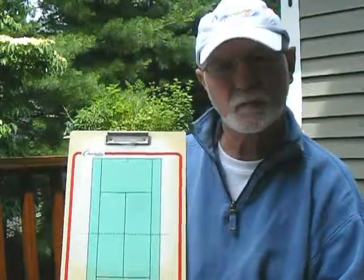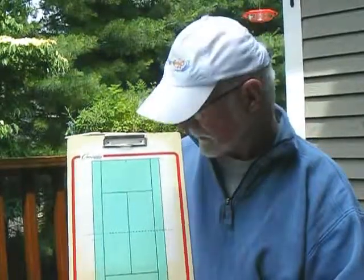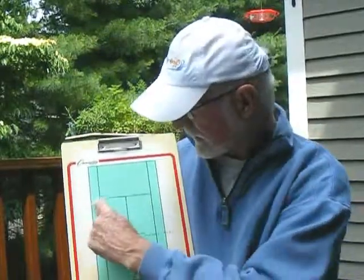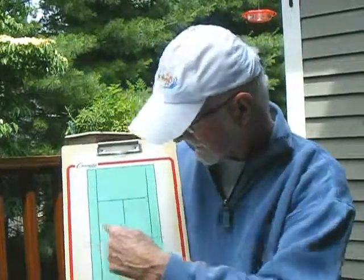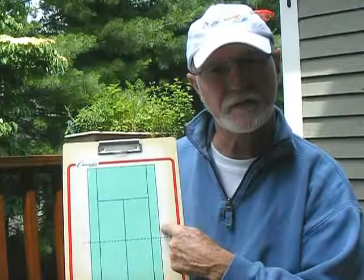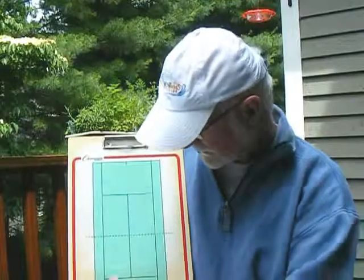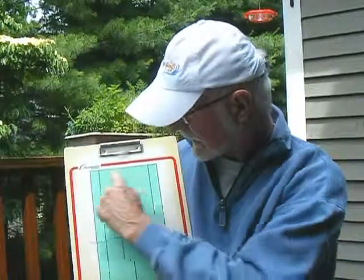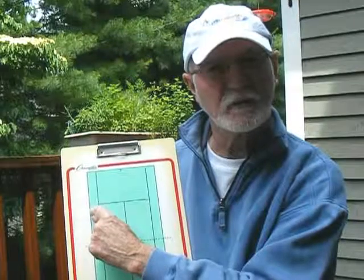In between the sidelines you'll notice what's called — we nickname it — a bowling alley. These are the doubles lines, used when you're playing with four players. This is part of the tennis court and the ball can be hit to that part. These are the outside lines for doubles.